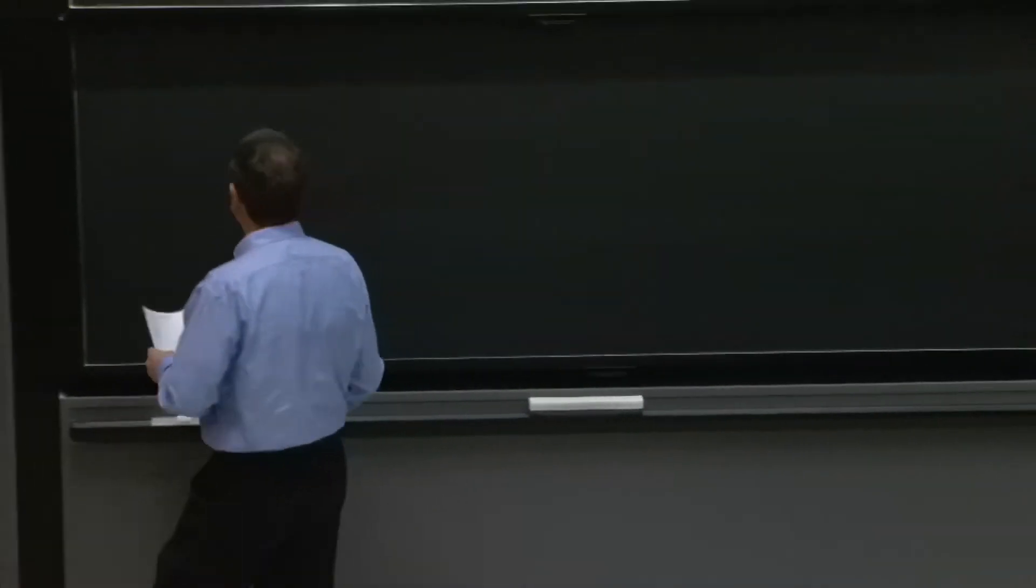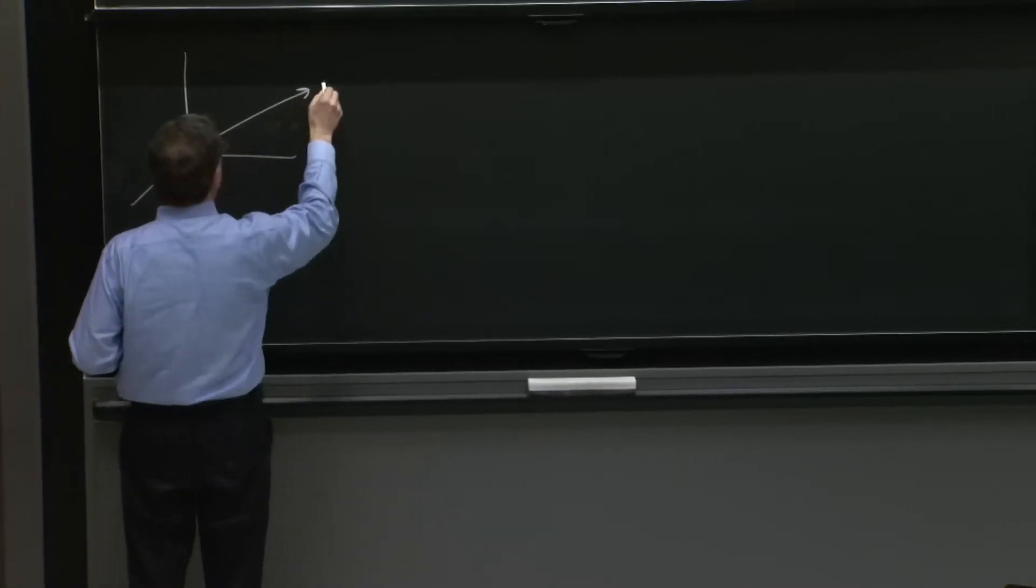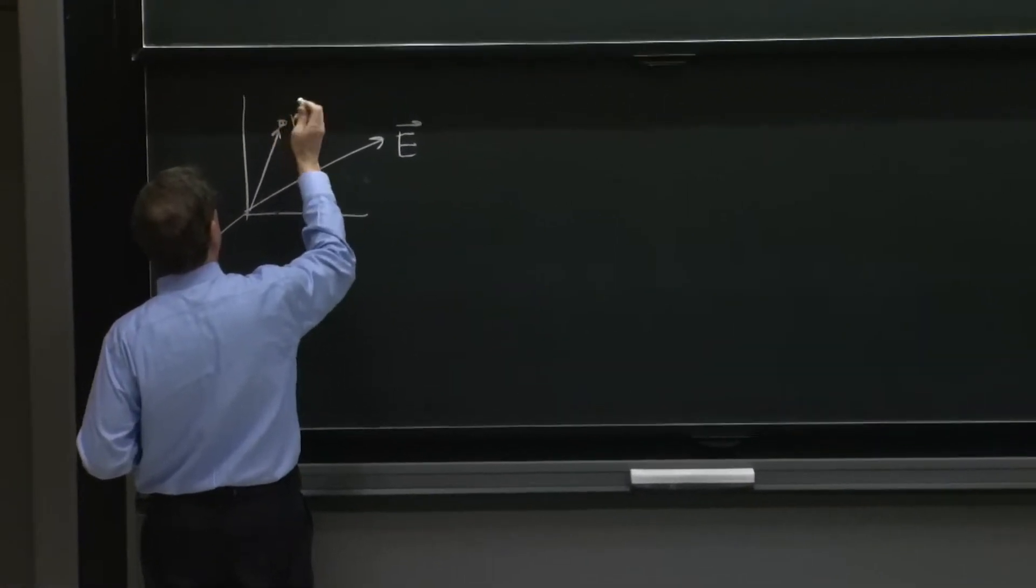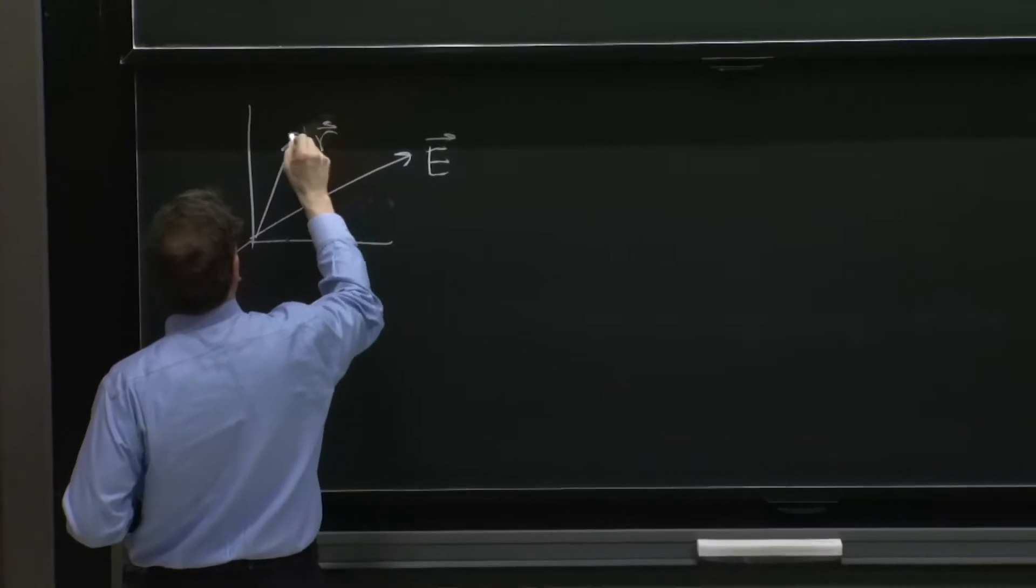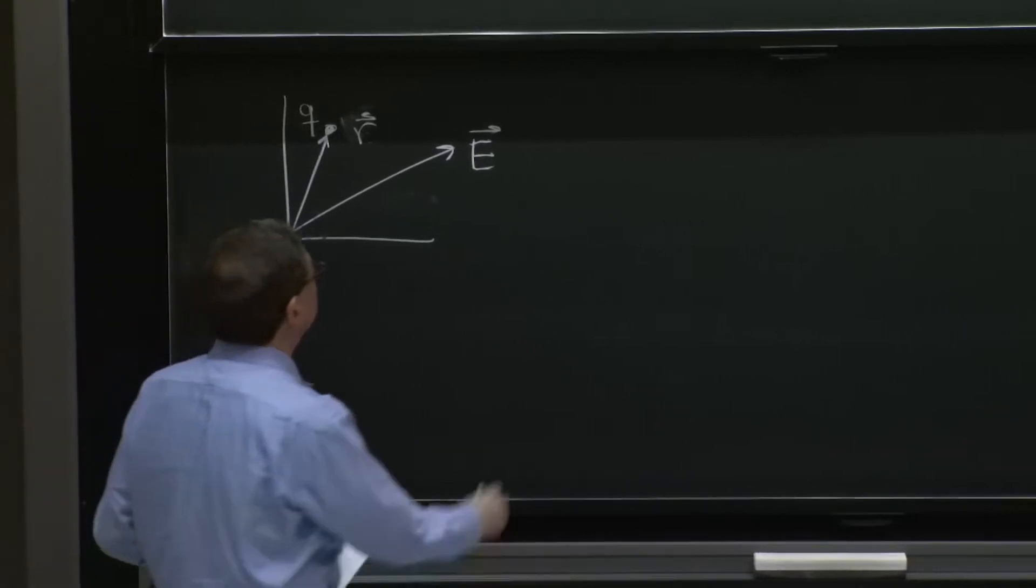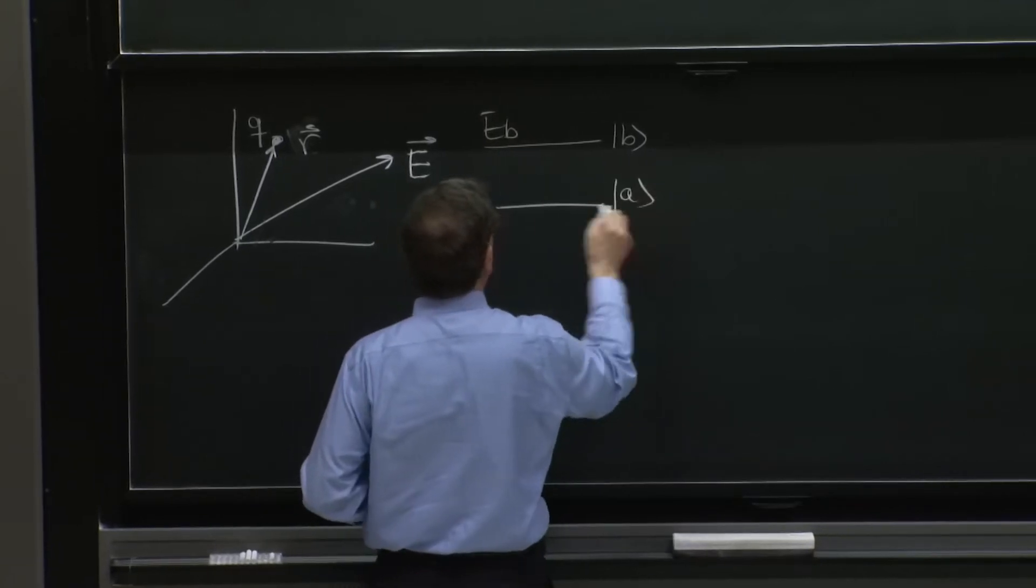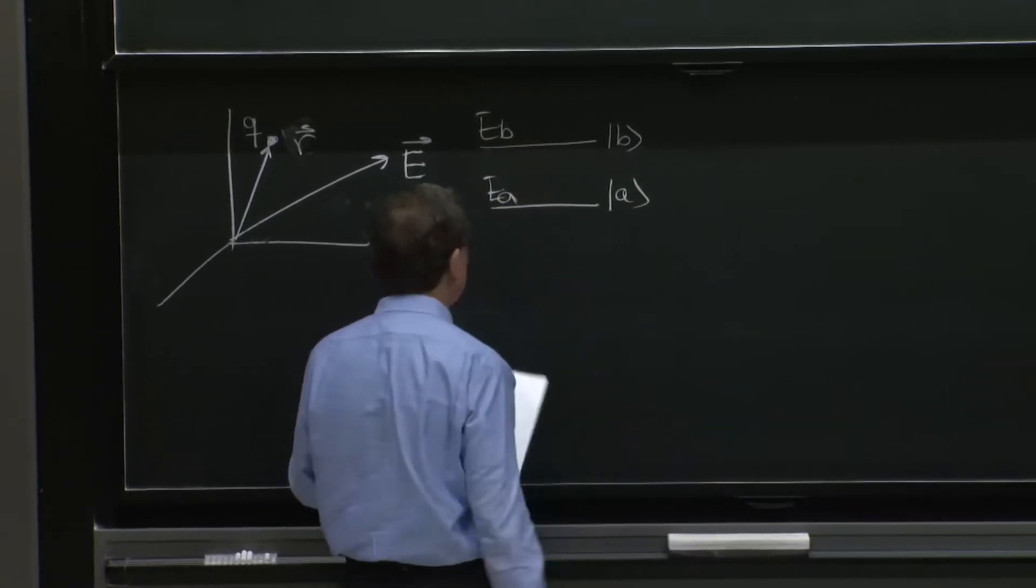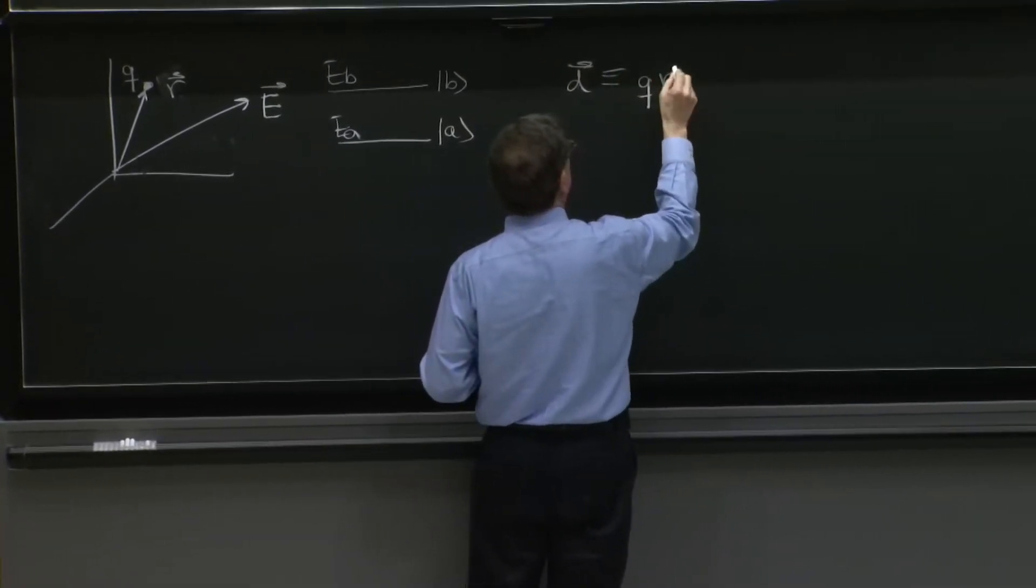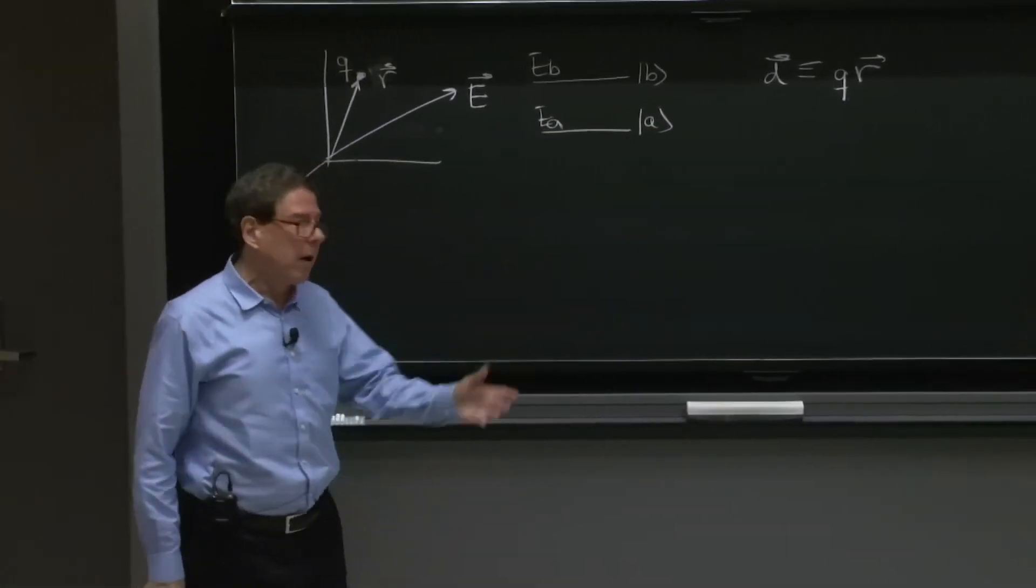So let me review a couple of things that we had. We have an electric field that interacts with the atom. There's a position vector that points to the charge q. And we have two levels, level b with energy Eb and level a with energy Ea. We introduce a dipole moment operator, which was defined as q times r. And it's an operator because r is an operator. The position is an operator in quantum mechanics.